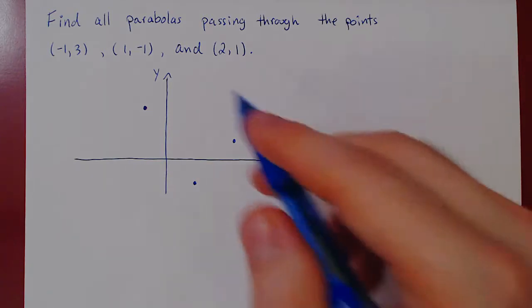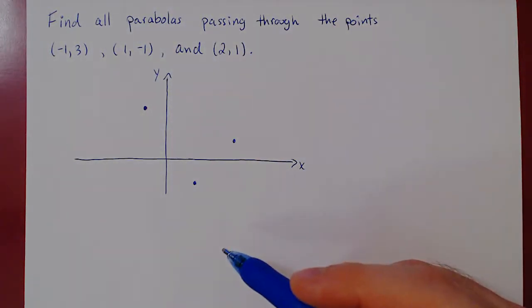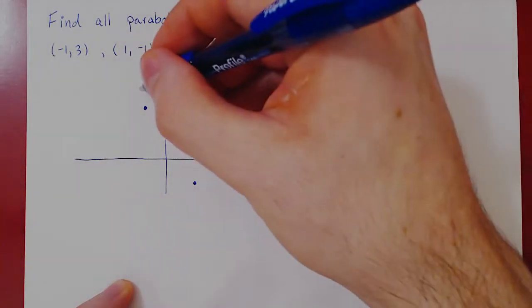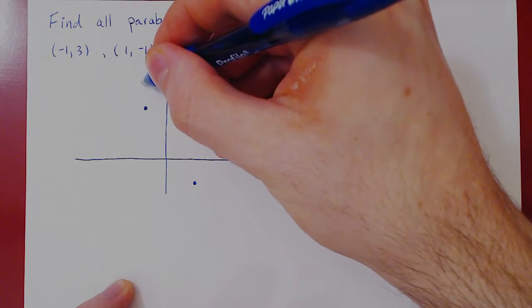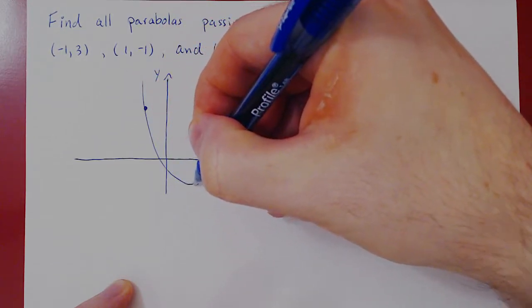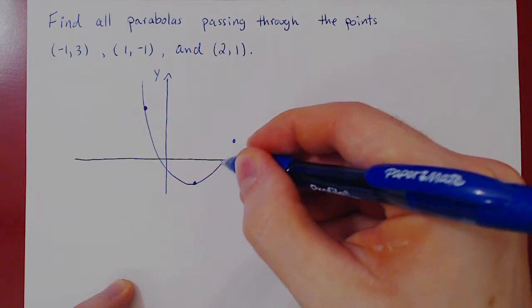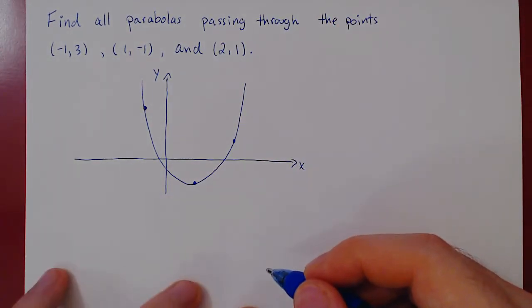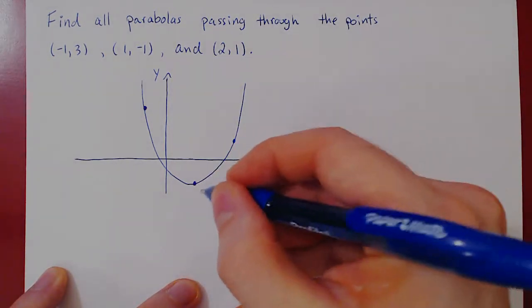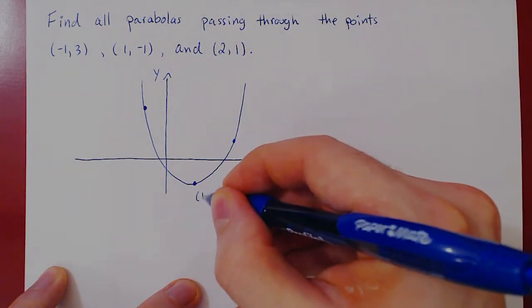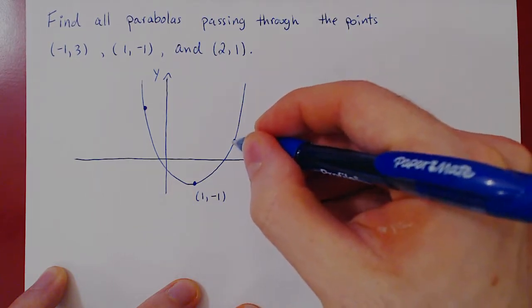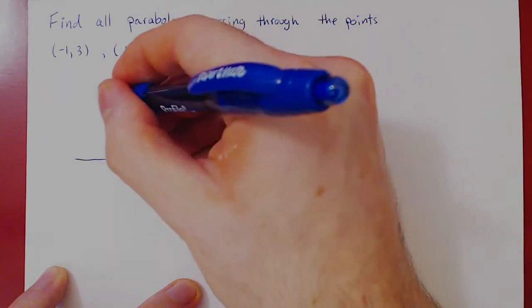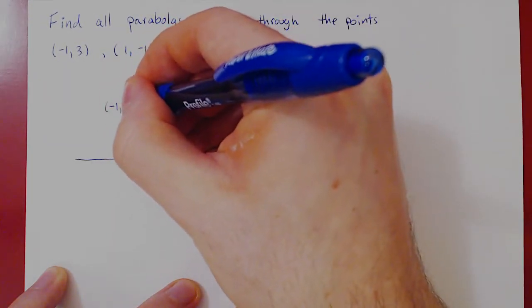So we have these three points. And we're looking for finding all parabolas passing through the points. So we can draw one of them that may look something like this. There may be others, we don't know, but we'll find out as we go along. So what are the points? Let's write them explicitly. This one was the point x equals one, y equals negative one. This point was the point x equals two, y equals one. And this one was the point x equals negative one, y equals positive three.